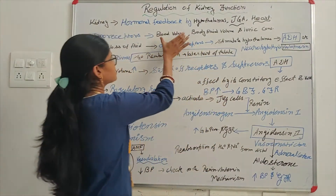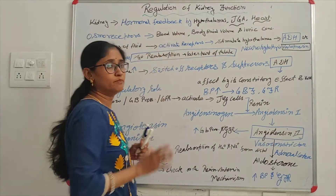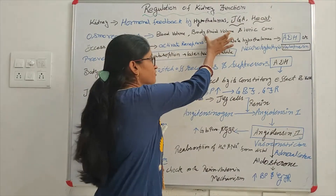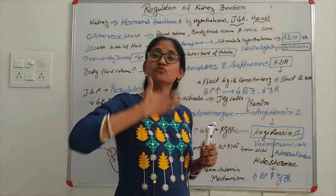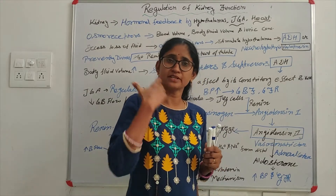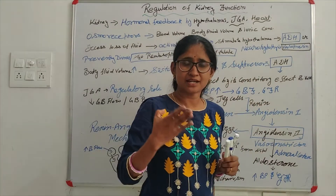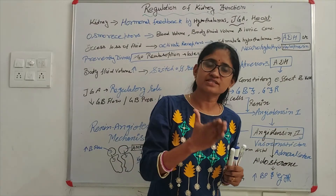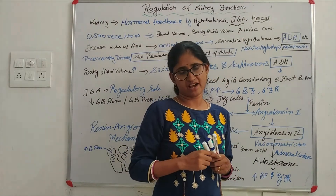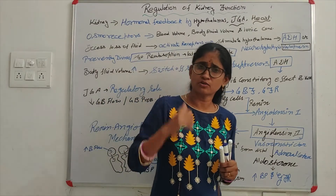The mechanism is controlled. First, let's look at what is present in the body: what is the volume of blood, how much fluid is present in the body, and the amount. The third thing comes to concentration — what is the ionic concentration? What is the amount of sodium, potassium, chlorine?